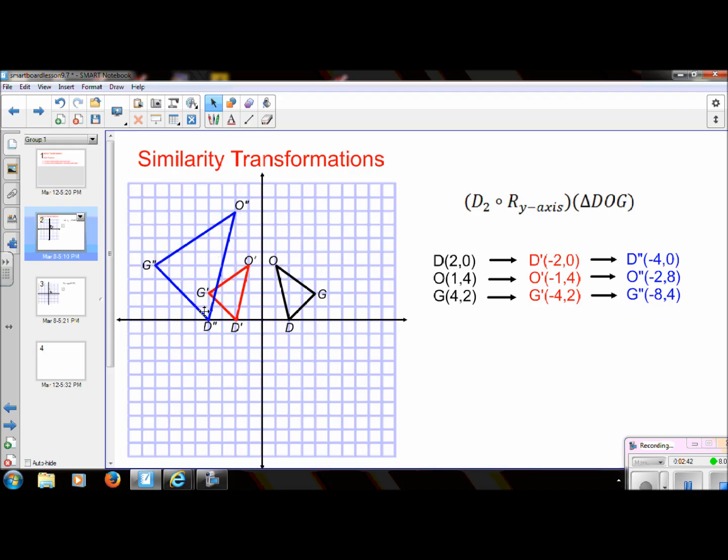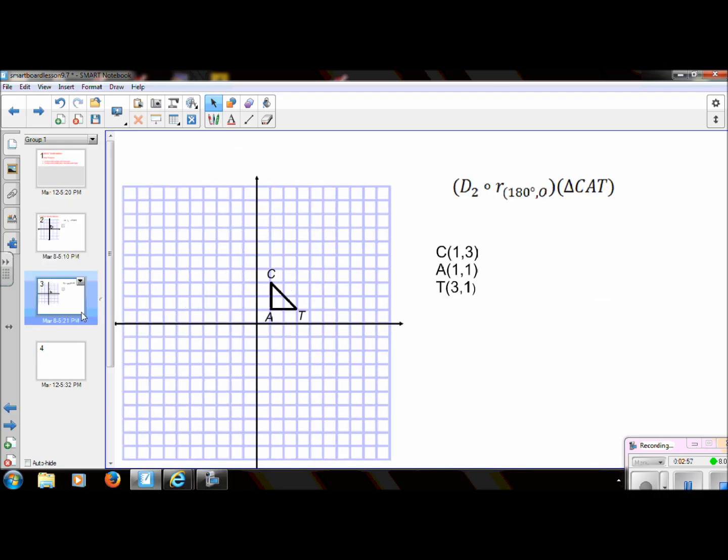All of the angles are congruent. So D would be congruent to D prime, and O is congruent to O prime, and then the corresponding sides all have the same scale factor, which of course we know is 2. Let's do one more, just to make sure we've got it down.